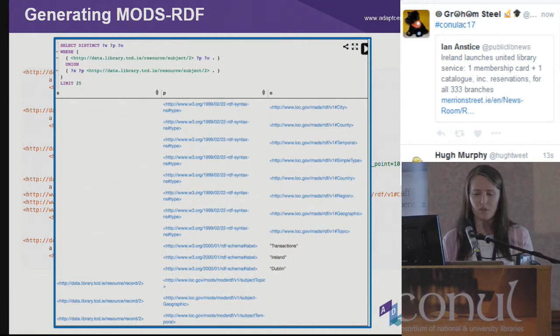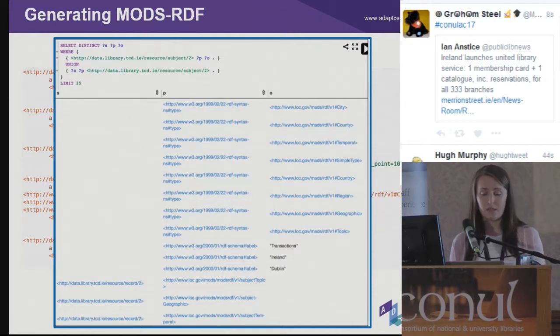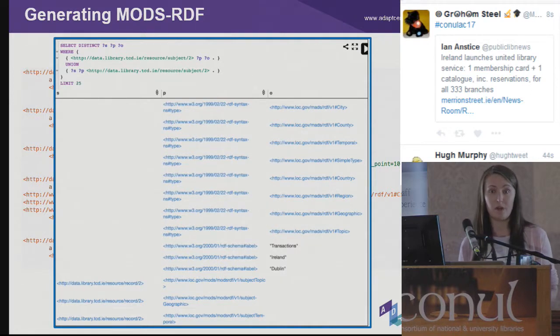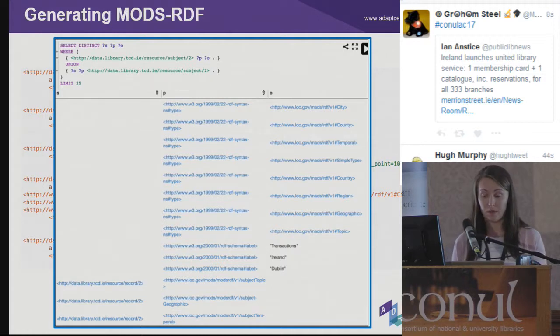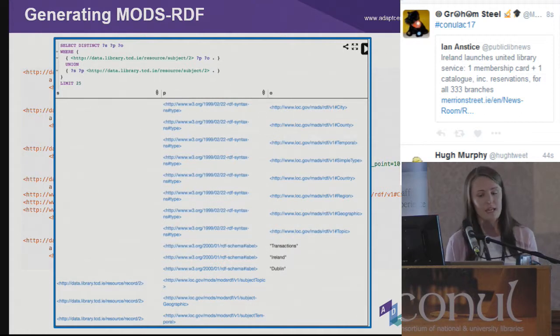SPARQL is a query language you can use to search your RDF records, allowing more detailed searches. Some example queries included searching by author, title, or abstract. Publishing detailed authoritative bibliographic records in RDF also allowed for more specific searches, such as searching by Library of Congress subject heading or genre and form terms.